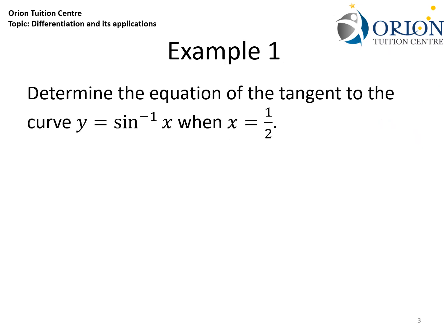In Example 1, we are asked to find out the equation of the tangent to the curve y equals sin inverse x at a point when x is equal to one half. First, we need to find out the point that the line passes through. That point will be (x₀, y₀), where x₀ equals one half. Correspondingly, y₀ will be equal to sin inverse of one half, which becomes π over 6.